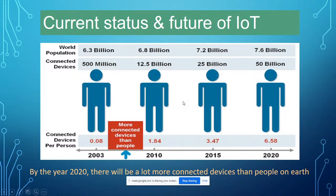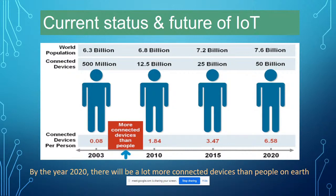Current IoT status: world population is 7.6 billion, connecting devices are 50 billion — more than 8 per person. Connecting per person is 6.58 devices. For example, one person uses a laptop and multiple mobile phones, so almost six IoT devices per person.